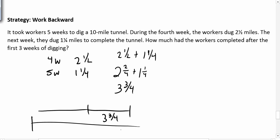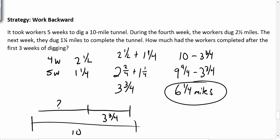Well, what operation am I going to use to find that? That would be subtraction. So I want to know what ten minus three and three-fourths is, and I'm going to rewrite the ten as nine and four-fourths minus three and three-fourths, and carry out the subtraction. So that's six and one-fourths. So how much did the workers complete after the first three weeks of digging? They did six and a fourth miles of digging.